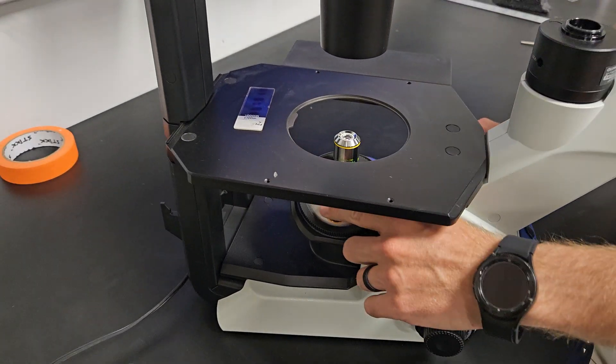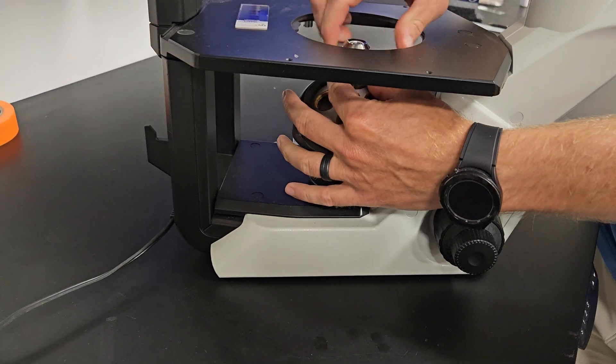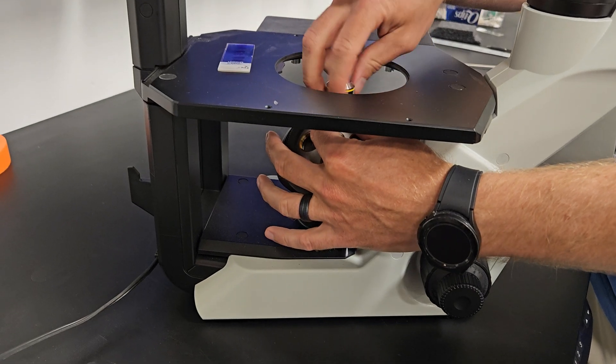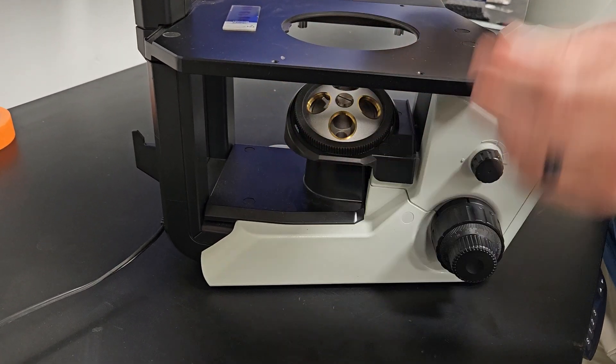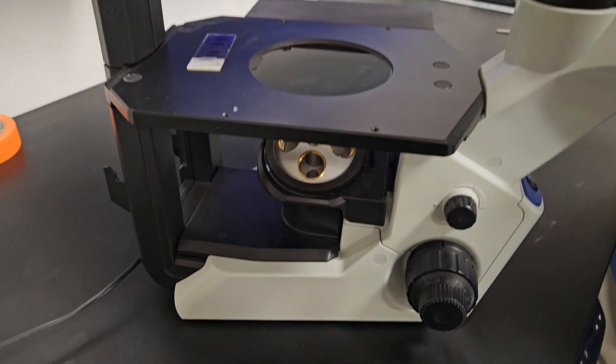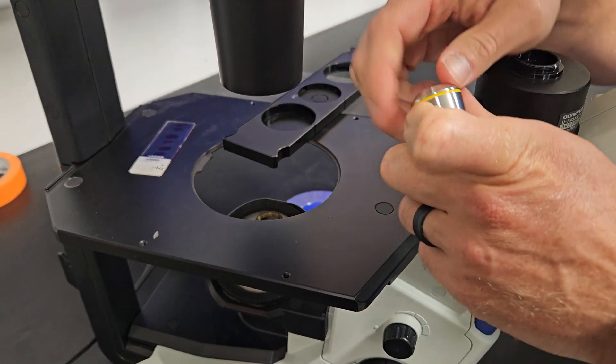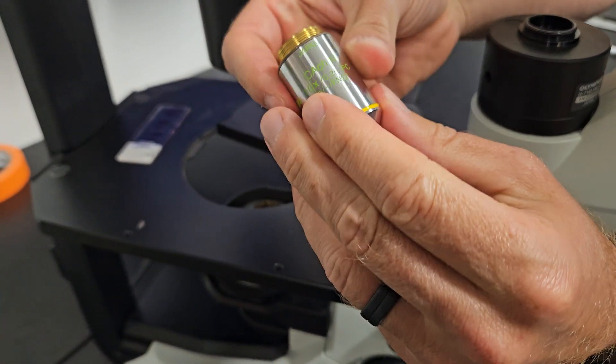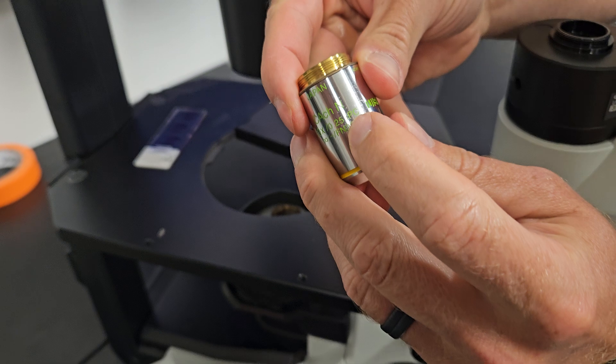So this one has a four place objective turret. We just have a 10X on there. Remember how we said IPC phase ring earlier? If you don't, we'll take it out and show you again. You got the IPC right here. This 10X, if you look right there, see how it says IPC?